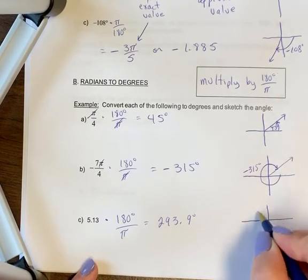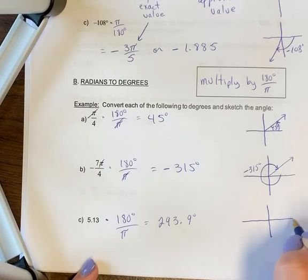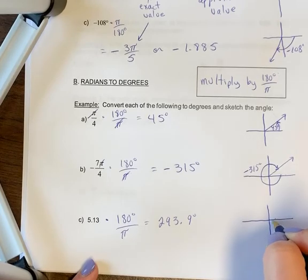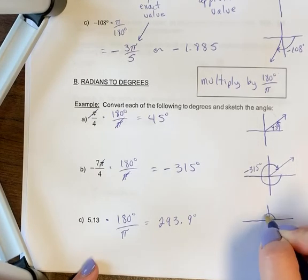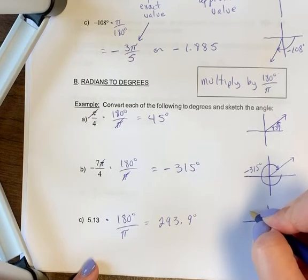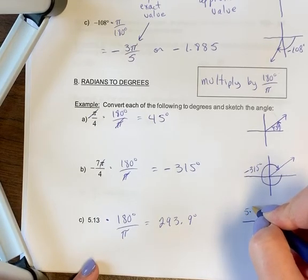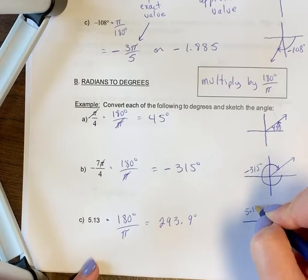And that will definitely help you here. So this is if you go around here 270, so it's a little past 270. And again, you want your directional arrow in here. So this is 5.13 or 293.9 degrees.